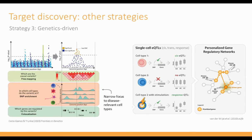Another important strategy is the genetics-driven approach, where we start with genetics for target identification and prioritization. Targets with genetic evidence — GWAS signals and so on — have been shown to be more likely to become successful drug targets, so we're essentially enriching for success. Single-cell data can help by providing cell-type resolution on genetic information. For example, using open chromatin within single cells to narrow focus to GWAS signals relevant to disease-relevant cell types, as well as single-cell eQTLs and single-cell derived regulatory networks — two areas just beginning to utilize single-cell data.